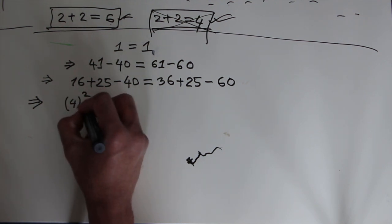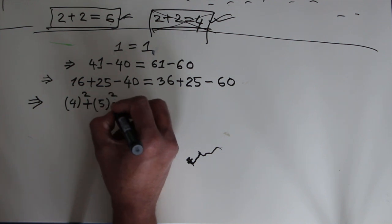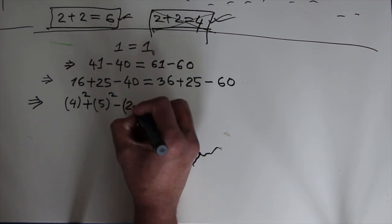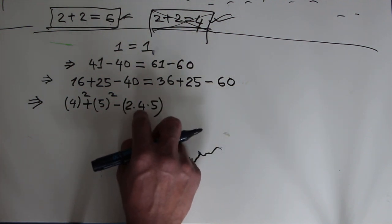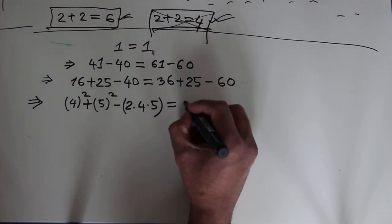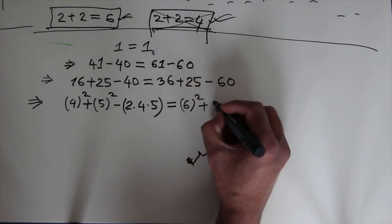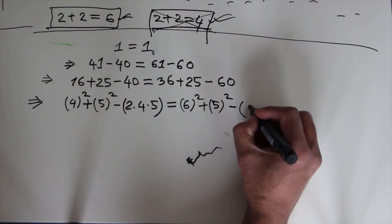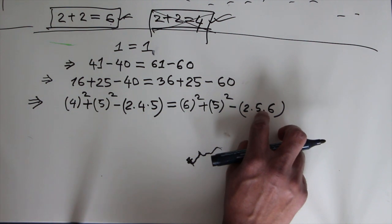I expand 16 as 4 squared, and 25 as 5 squared. Then minus 40, I rewrite as 2 times 4 times 5, because 2 times 4 is 8, and 8 times 5 equals 40. On the right side: 36 I rewrite as 6 squared, plus 25 as 5 squared, minus 60 expanded as 2 times 5 times 6, because 2 times 5 is 10 and 10 times 6 is 60.